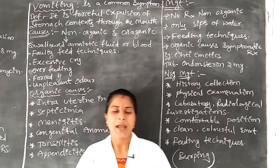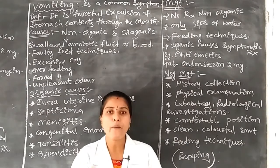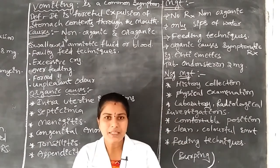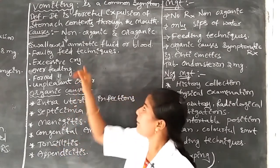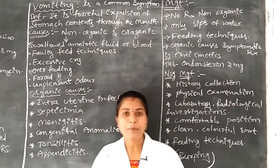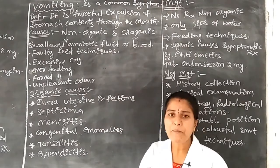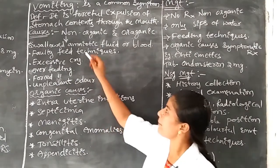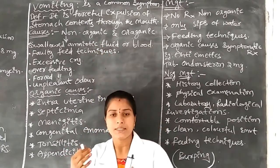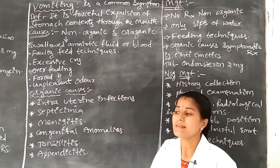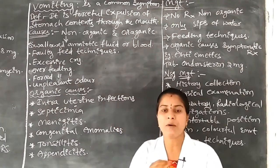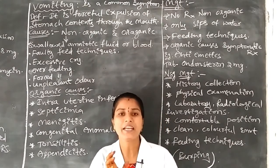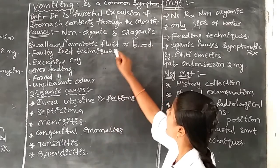Amniotic fluid is present in the mother's womb or uterus for protection of the fetus. Every pregnant mother has amniotic fluid in the uterus. Sometimes the infant swallows amniotic fluid. Sometimes the pregnant mother may have disorders like blood leakage or bleeding problems, and the blood may be swallowed by the infant, which may cause vomiting.